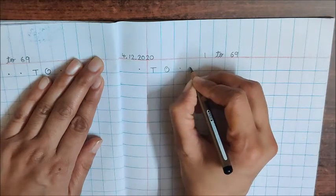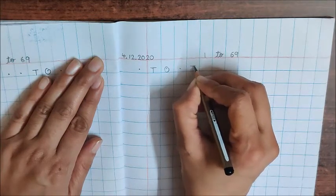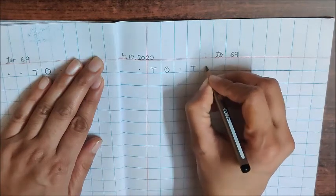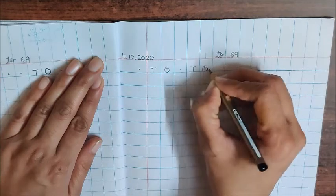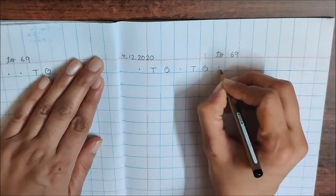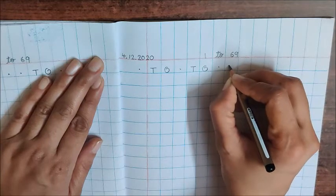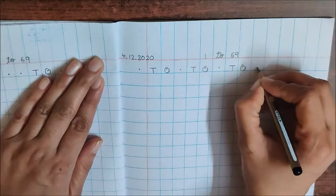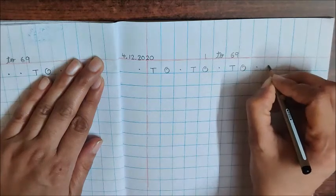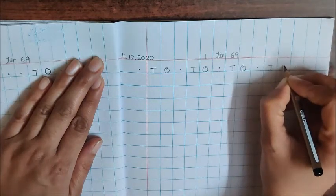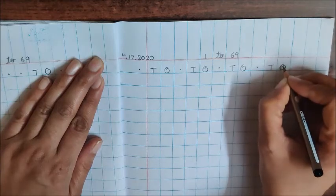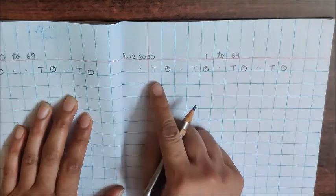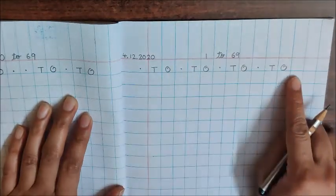Put a dot again. Again write down T, O. Again put a dot. Write down again T, O, dot, T, O. See children, on one page, we have written four TOs.